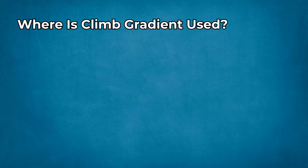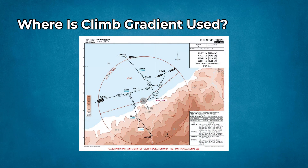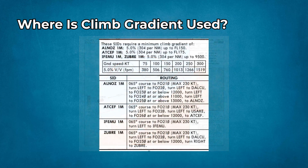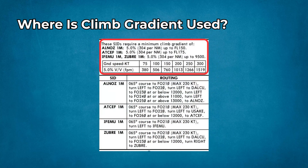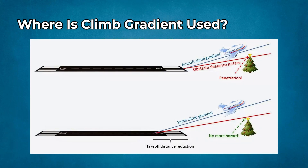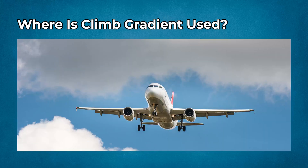Where is climb gradient used? Standard instrument departures and obstacle departure procedures routinely specify climb gradient requirements, and these are mandatory when included in ATC clearance. Diverse departures assume at least 200 feet per nautical mile unless a higher gradient is published due to obstacles. Procedure design criteria use climb gradients to ensure safe obstacle clearance. Climb gradient performance is also considered during certification, particularly in one-engine inoperative scenarios and second- or third-segment climb tests. Though certification uses net or gross performance, operators must ensure aircraft can meet published gradients.